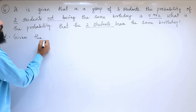Therefore, P of E bar equals 0.008. Therefore, the probability of two students having the same birthday is equal to 0.008.